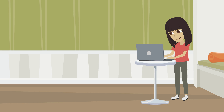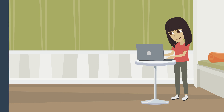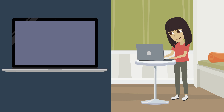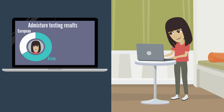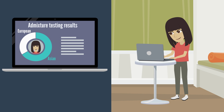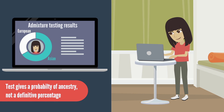Once all the data has been processed, Daisy can access her admixture testing results online. Her results are obtained by analyzing less than one percent of Daisy's DNA and determining the most likely origin of her DNA variants. Although hundreds of thousands of DNA sites are analyzed to obtain a more reliable result, what these tests can provide is a probability of Daisy's ancestry — not a definitive percentage.